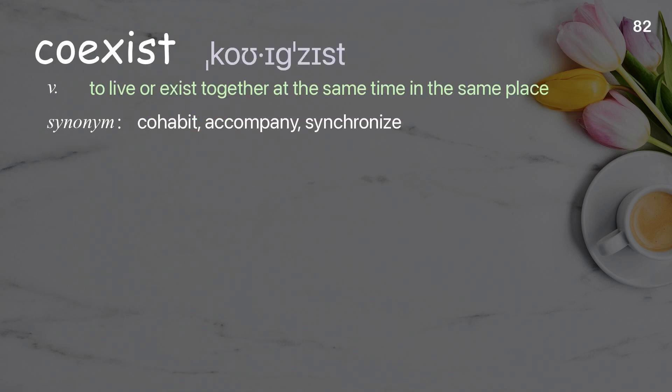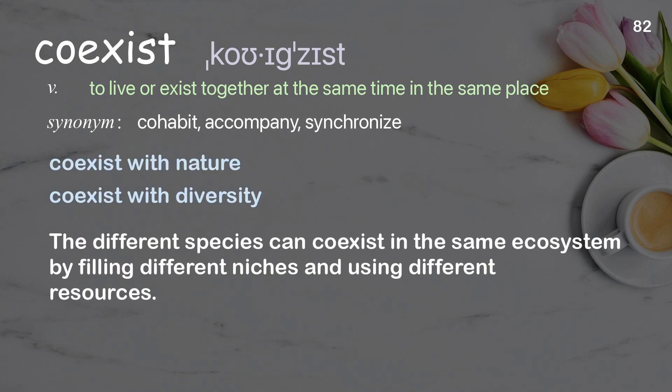Coexist: to live or exist together at the same time in the same place. Examples: coexist with nature. The different species can coexist in the same ecosystem by filling different niches and using different resources.